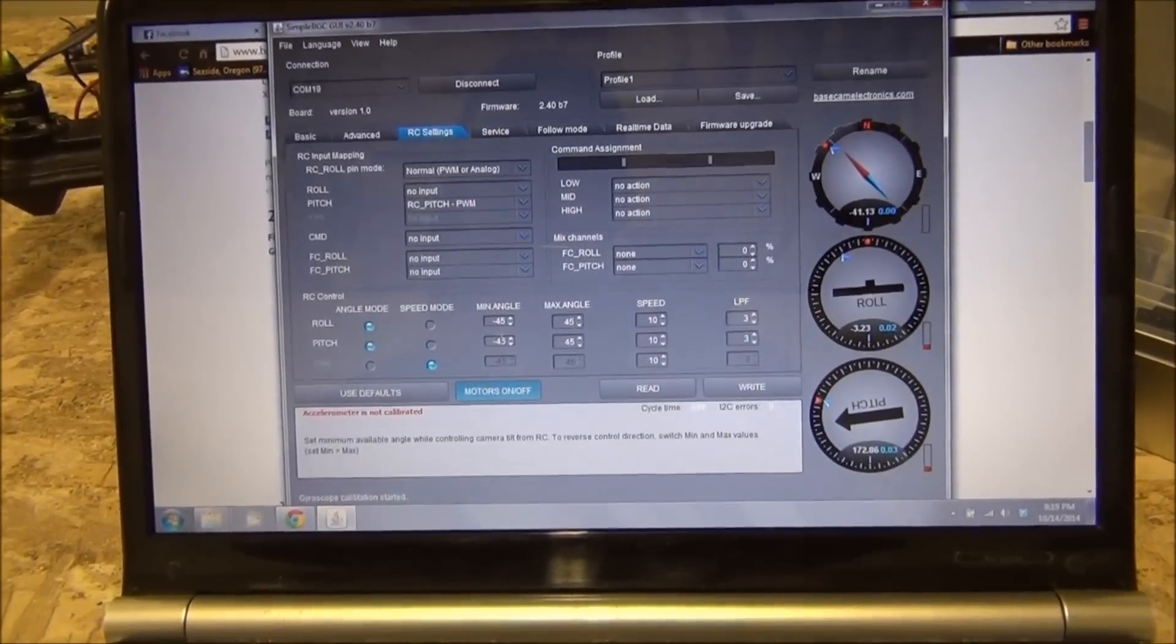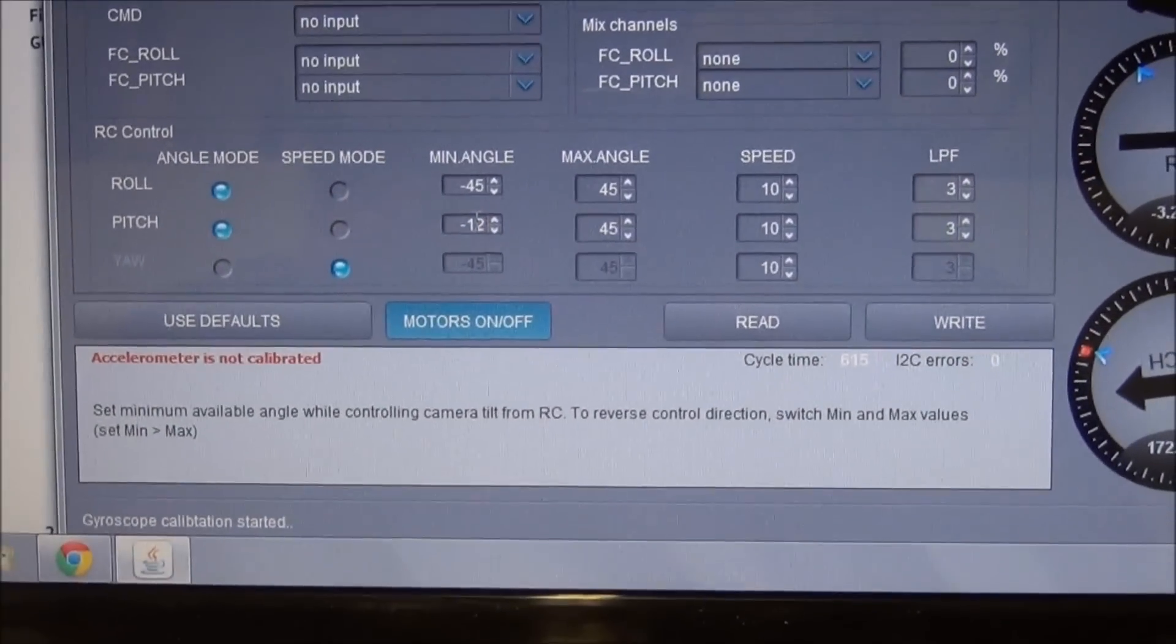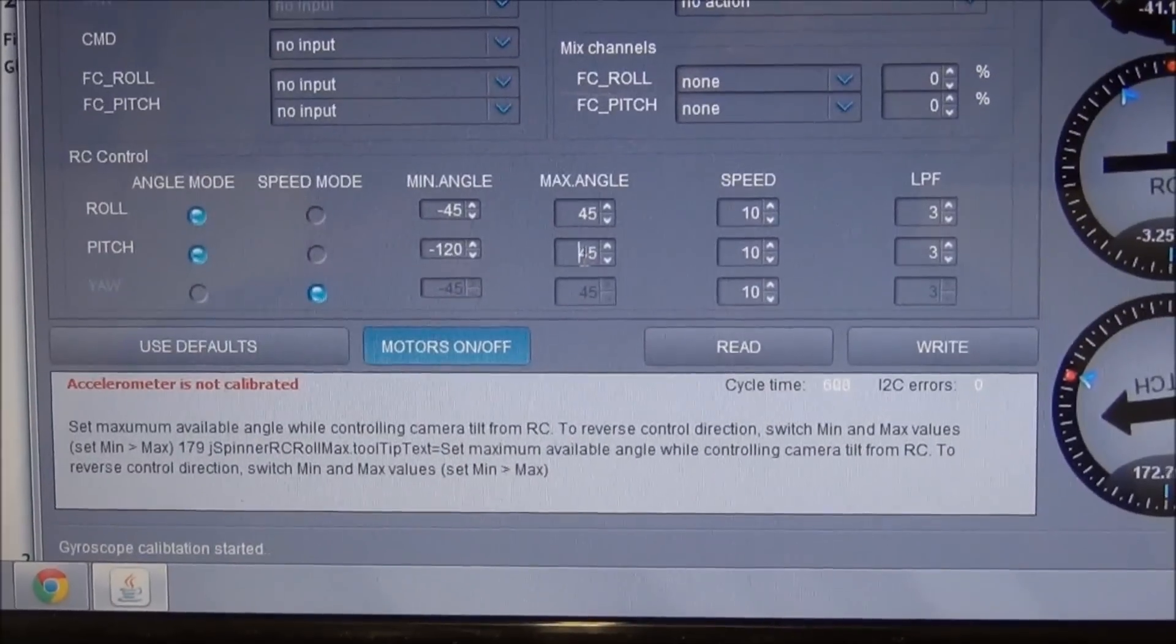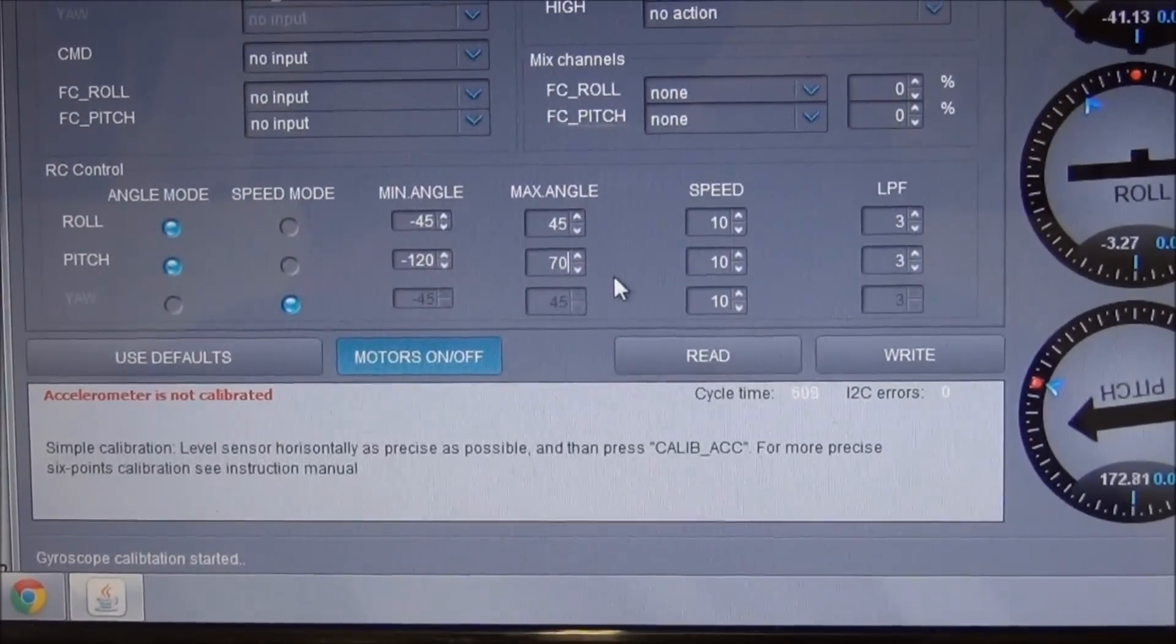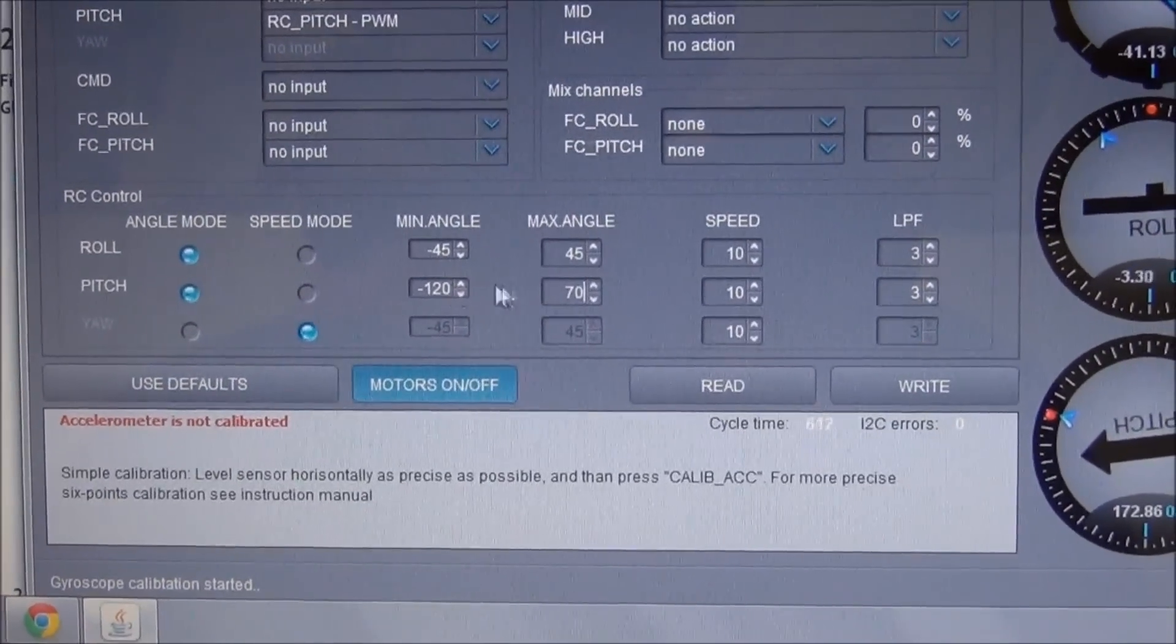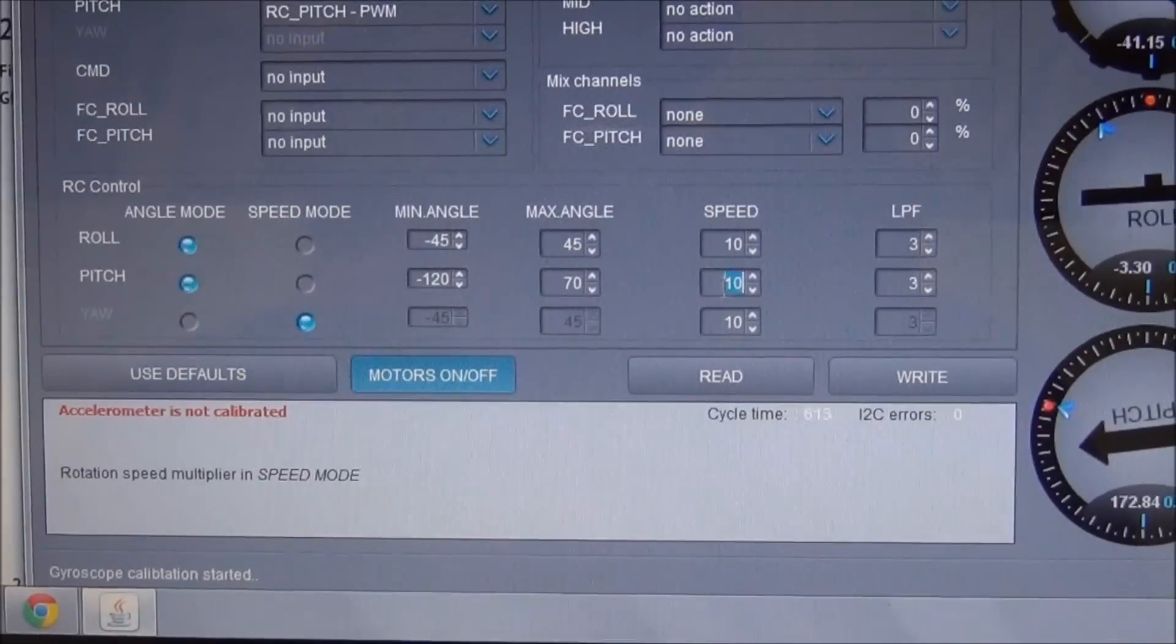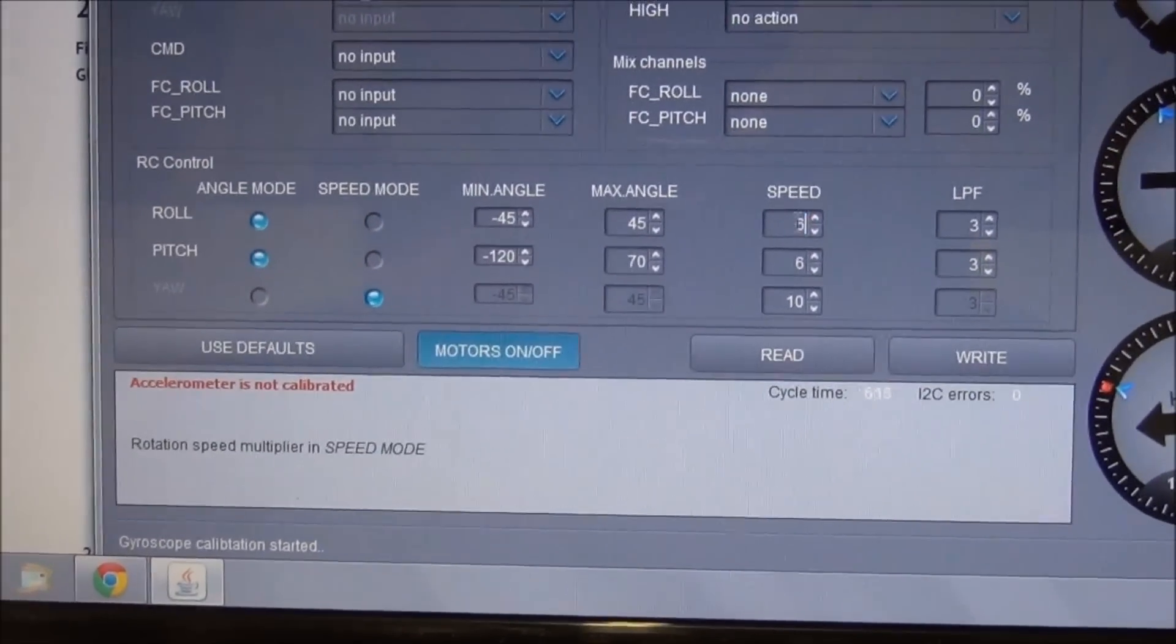I'm going to change this pitch value to minus 120 and positive 70. And just from my experience, that will give me a full range of motion from my transmitter on my pitch. I'm going to change the speed down to six. Otherwise it just moves too fast.